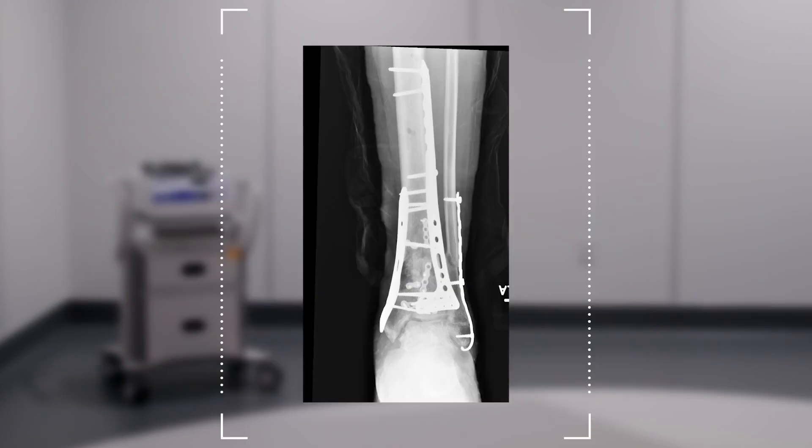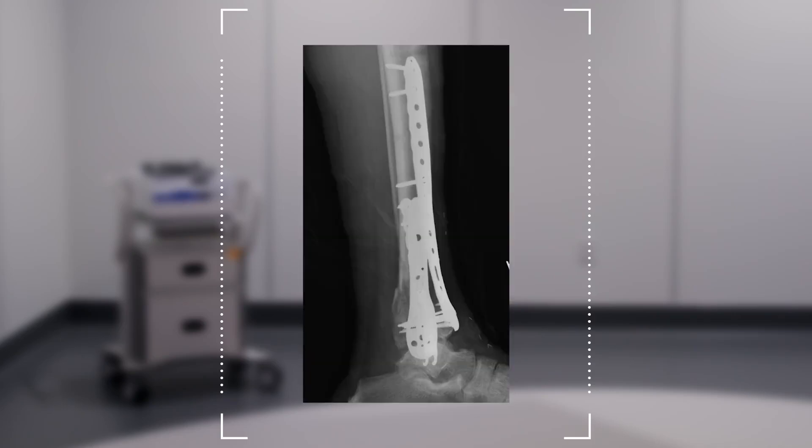At two-year follow-up, you can see maintenance of the talus centered in the distal tibia, maintenance of the articular reduction, and maintenance of that compressed distal articular surface so critical to support the talus for the best potential long-term outcome for this patient.